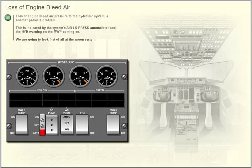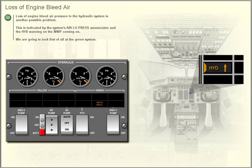Loss of engine bleed air. Loss of engine bleed air pressure to the hydraulic system is another possible problem. This is indicated by the system's air low pressure enunciator and the hydraulic warning on the master warning panel coming on. We are going to look first of all at the green system.